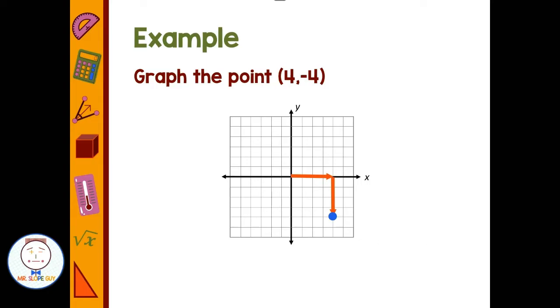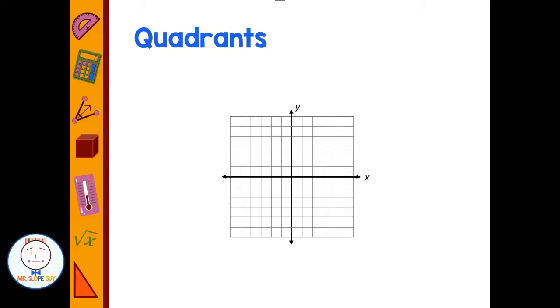So when we're looking at the coordinate plane, we have what are called quadrants. We have the four different sections: 1, 2, 3, 4. The four different areas. So we like to use Roman numerals in math to label our quadrants. So our first quadrant is I, and then working counterclockwise we have quadrant II, quadrant III, quadrant IV.